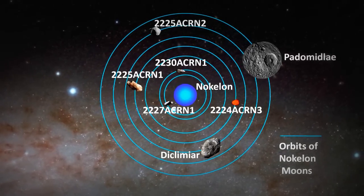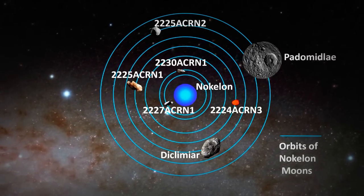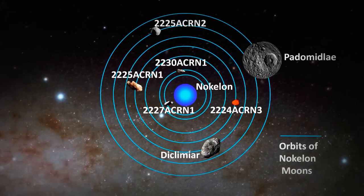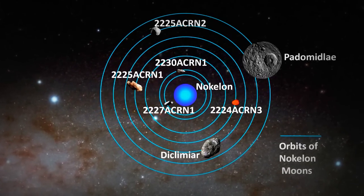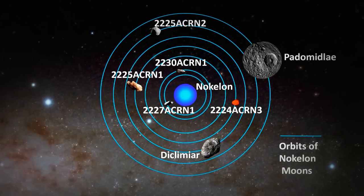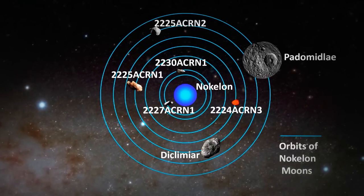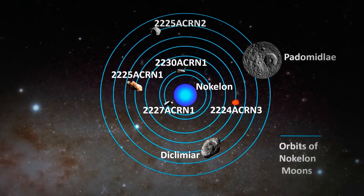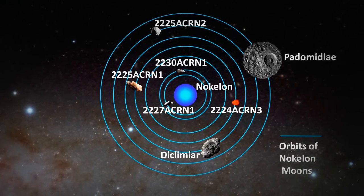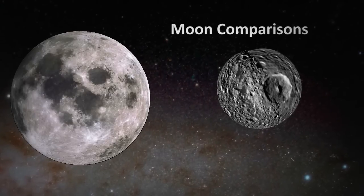The moon orbits are the closest: 2227A71, 2230A71, and 2225A71. Then comes 224A73 and Duclamia. The furthest are 2225A72 and Duclamia.